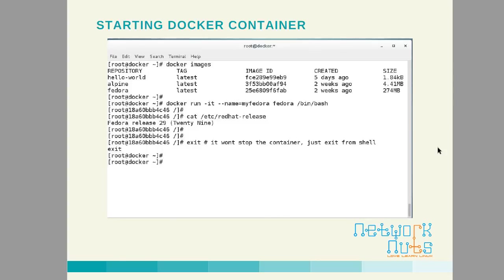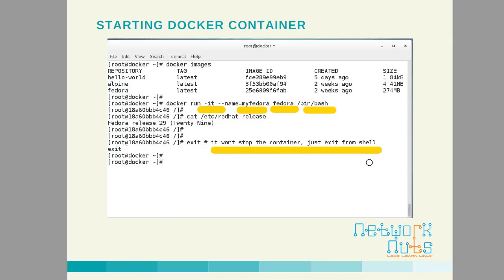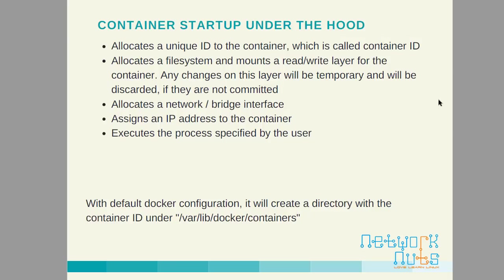When you start a container normally it just starts and exits automatically — you won't be given a shell to work in. Whenever you want to work inside the container you should use the -it option: -i for interactive and -t to allocate a pseudo terminal. Here I've been given a terminal inside a Docker container with a container ID, using the Fedora image, naming my container 'my_fedora', and executing /bin/bash. When you want to exit, use the exit command — remember, it won't stop the container, it just exits the shell.